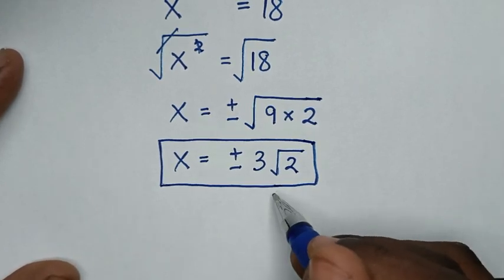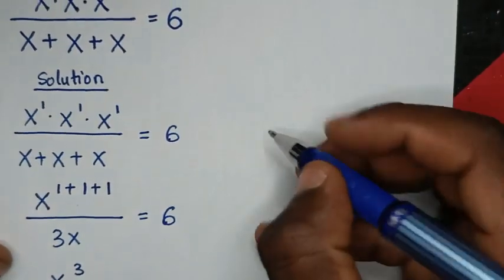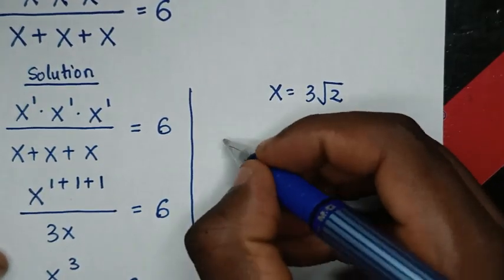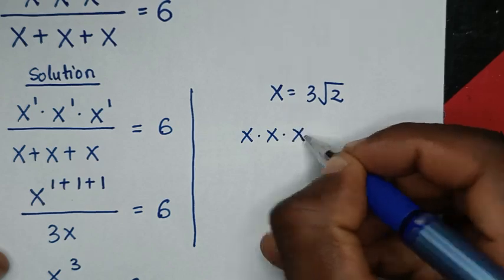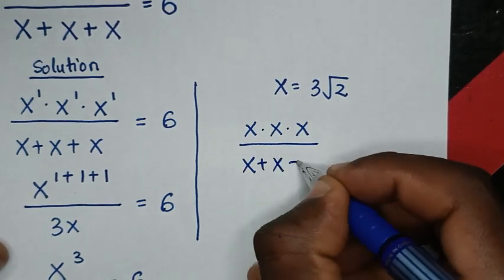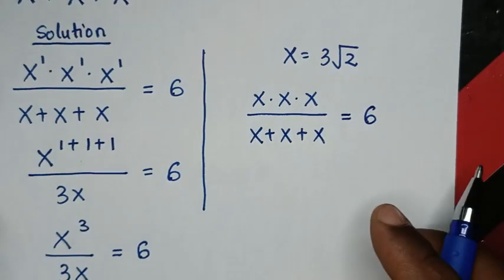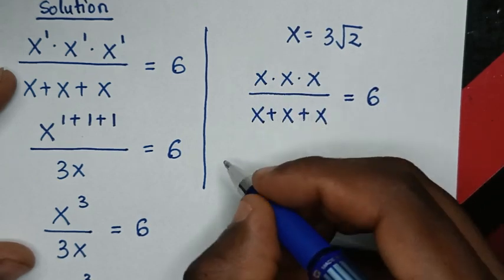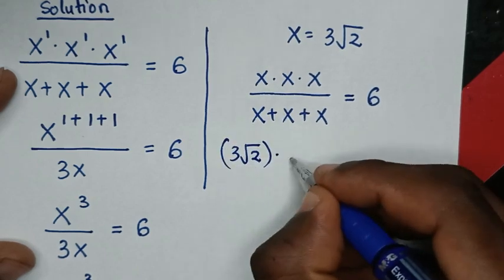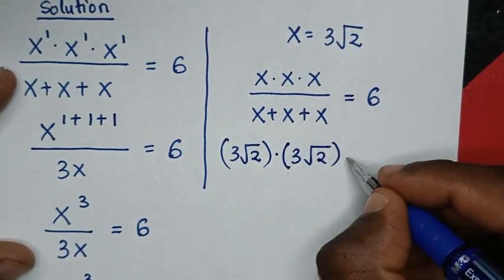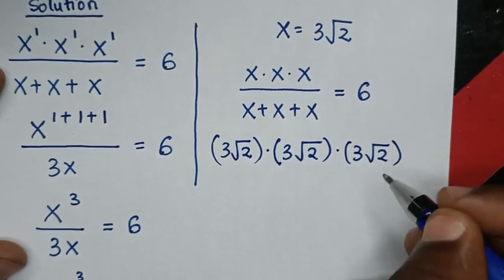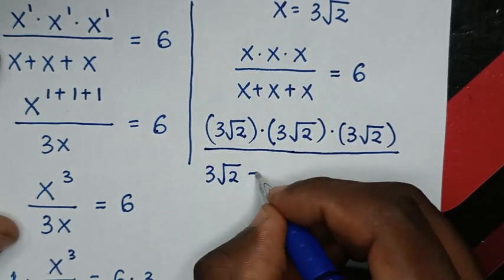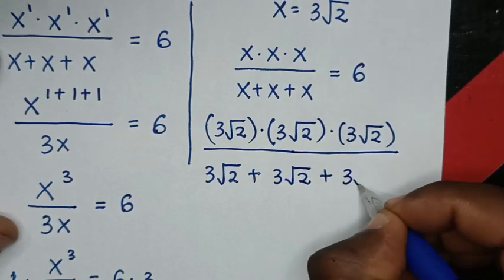Now let's check if these answers are correct. To check for x is equal to 3 square root of 2, we will write the original problem: x times x times x over x plus x plus x is equal to 6. We substitute x equals 3 square root of 2, so from x times x times x it will be 3 square root of 2 bracket times 3 square root of 2 bracket times 3 square root of 2 bracket over x plus x plus x, which is 3 square root of 2 plus 3 square root of 2 plus 3 square root of 2.